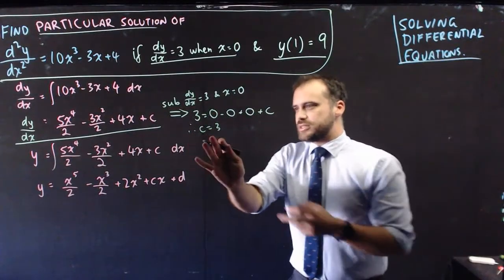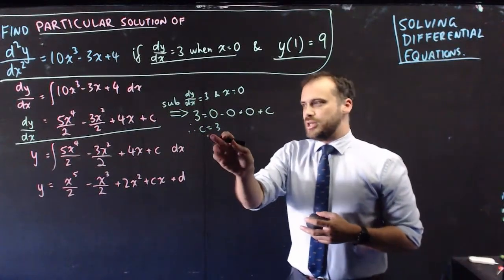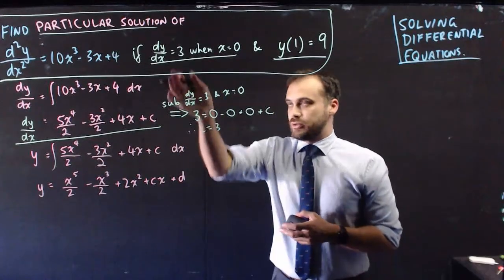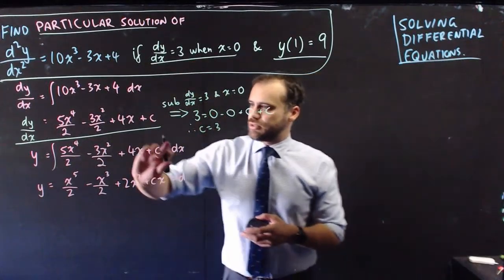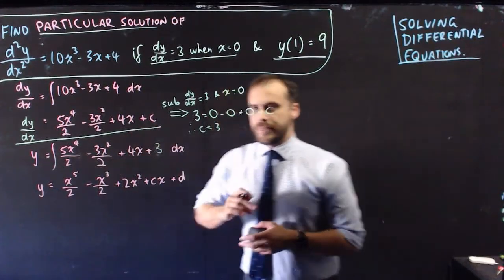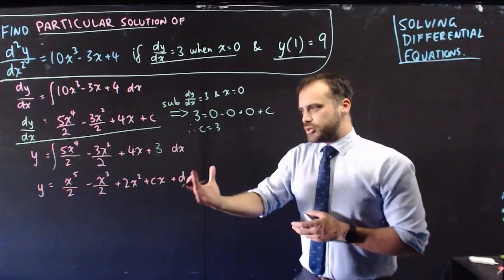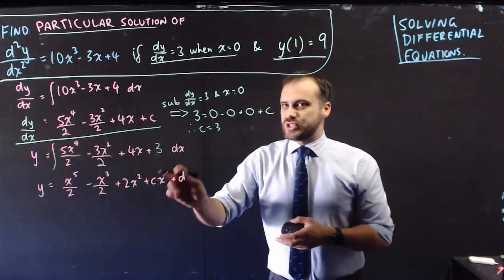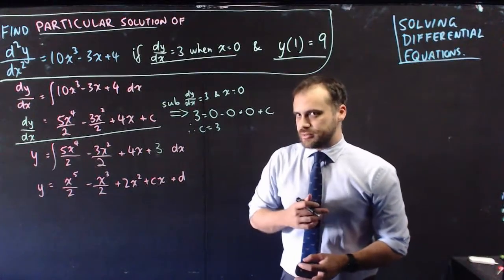That means that I can use that c equals 3 information in my next line of working, because I've been told that c is equal to 3. So I can get rid of that, and say that that's 3. Which means that my new y equation is no longer this, it's this, but instead of cx, it's 3x.